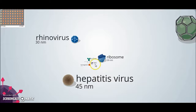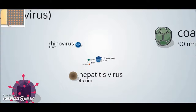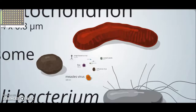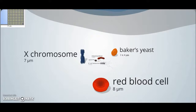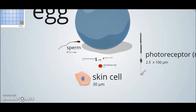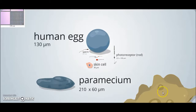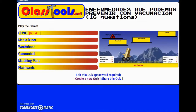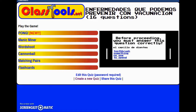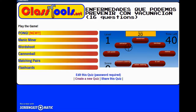What we see here are simply some molecules or cell structures. We see this virus, another virus, another virus, and we observe the size of the virus with respect to the size of the bacteria.